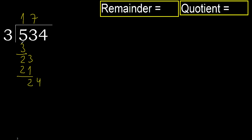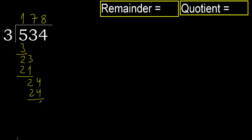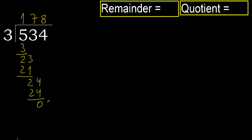24. 3 multiplied by 8 is 24. It is not greater, ok. Subtract: 24 minus 24 equals 0. Next, there is no more number, therefore finish it.